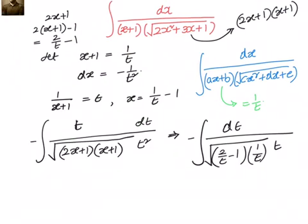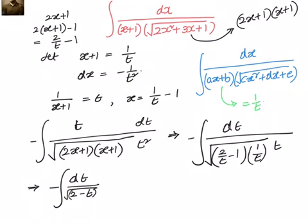Let us go to the next step. We can simplify this and write it as minus of dt integral. Taking LCM, we have square root of (2 minus t) divided by t, and the 1 by t cancels. Left out is minus dt by square root of (2 minus t).